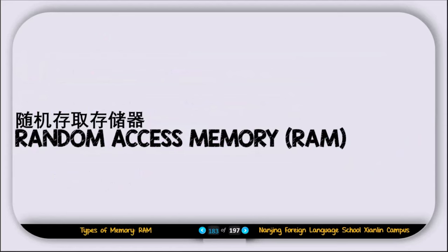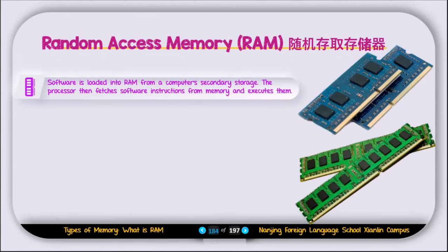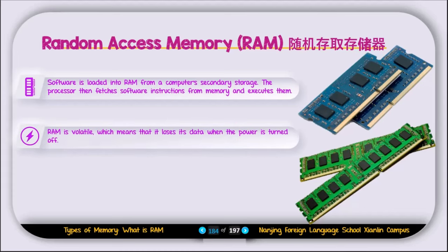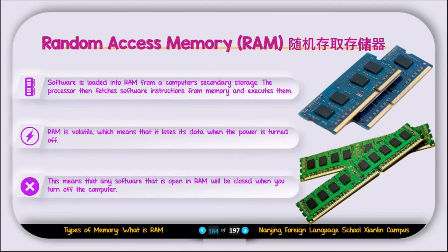First let's discuss random access memory or RAM. Software is loaded into RAM from the computer's secondary storage. The processor then fetches software instructions from memory and executes them. RAM is volatile, which means that it loses its data when the power is turned off. This means that any software open in RAM will be closed when you turn off the computer.